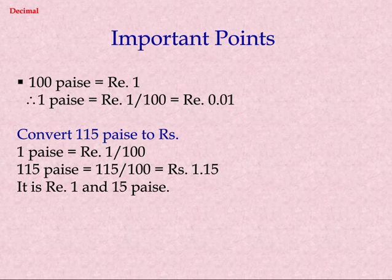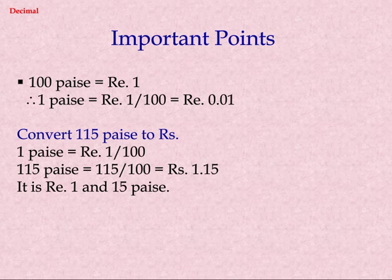Important points. 100 paise equals rupee 1. Therefore, 1 paise equals rupee 1/100, which equals 0.01 rupees. To convert 115 paise to rupees: 115 paise equals 100 paise plus 15 paise, which equals rupee 1.15. It is rupee 1 and 15 paise.